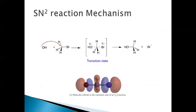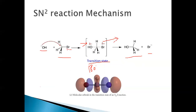Looking at the mechanism of the SN2 reaction, methyl bromide reacts with OH minus to form methyl alcohol and Br minus, proceeding through a transition state. The attacking nucleophile comes from the backside of the methyl bromide molecule — that is, directly opposite to the direction of the leaving nucleophile — at exactly 180 degrees to the plane of the C-Br bond.